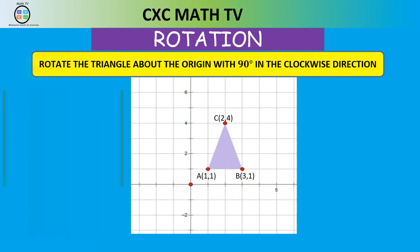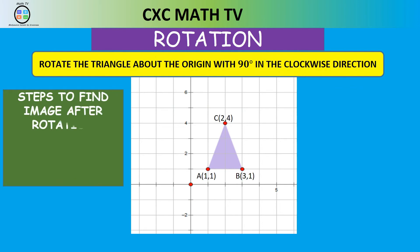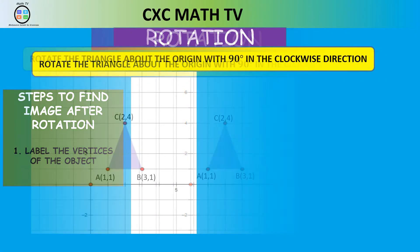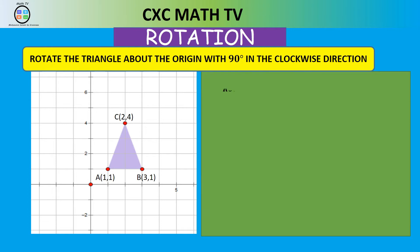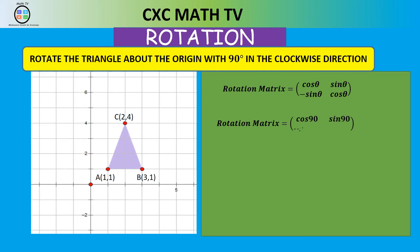Labeling the vertices as A, B, and C, we get A = (1,1), B = (3,1), and C = (2,4). Now we input 90 degrees into the rotation matrix: cos(90°) = 0, sin(90°) = 1, −sin(90°) = −1, cos(90°) = 0, giving us the matrix [0, 1; −1, 0].